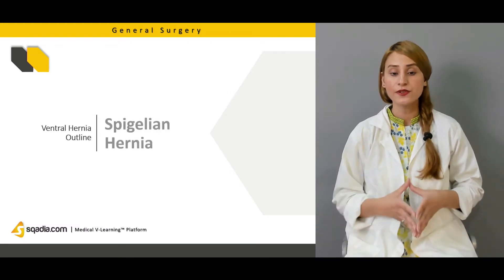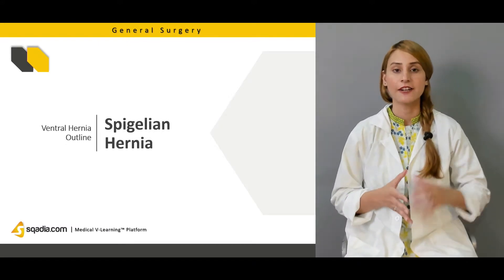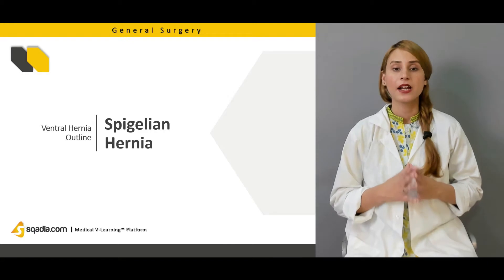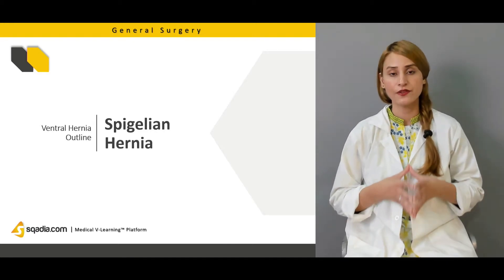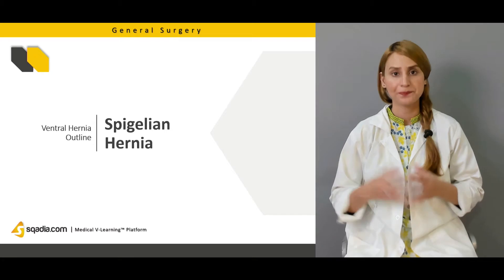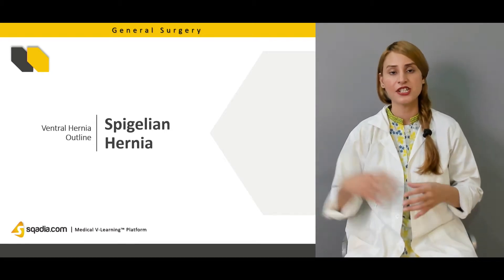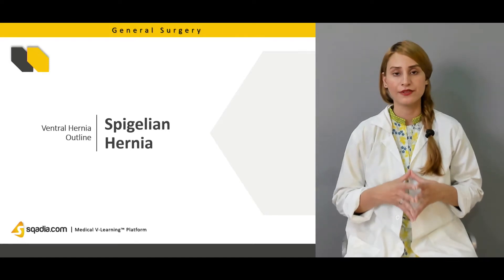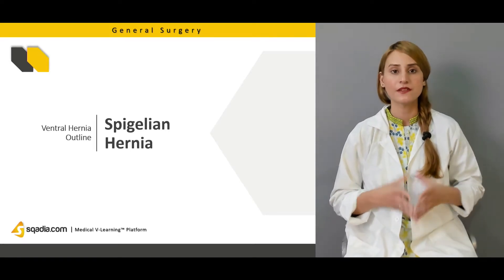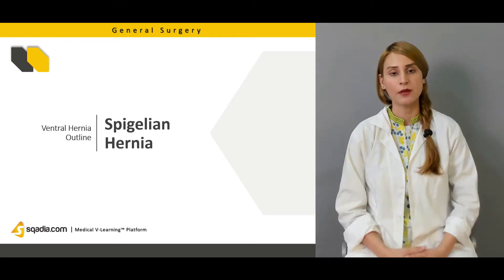We will also talk about spigelian hernias. Although these hernias are very much rarer, since they are part of the ventral abdominal hernias and mostly extend from the spigelian fascia on the lateral border of the rectus muscle, they are also part of the differential diagnosis of inguinal and femoral hernias.